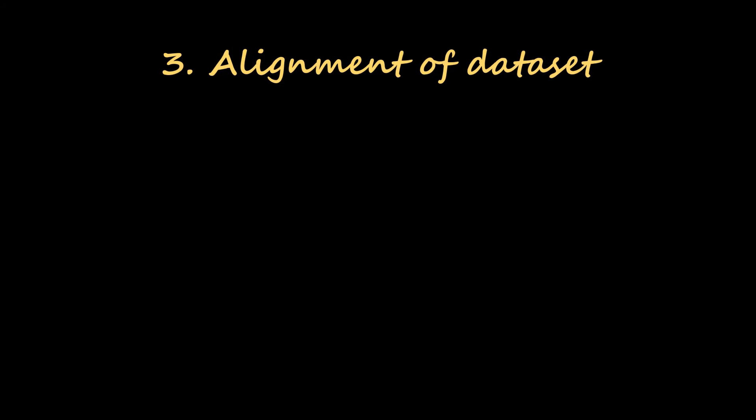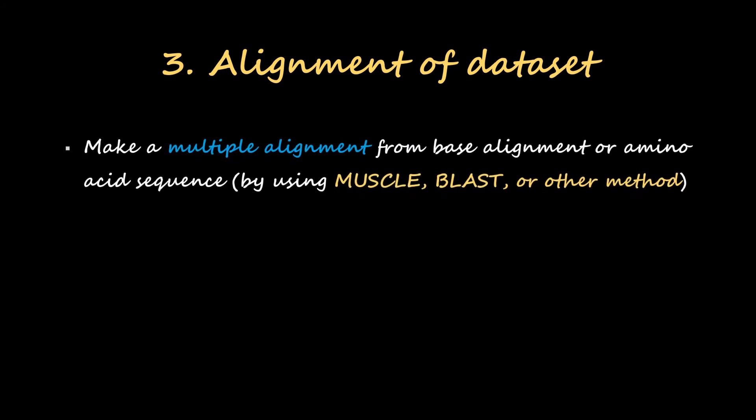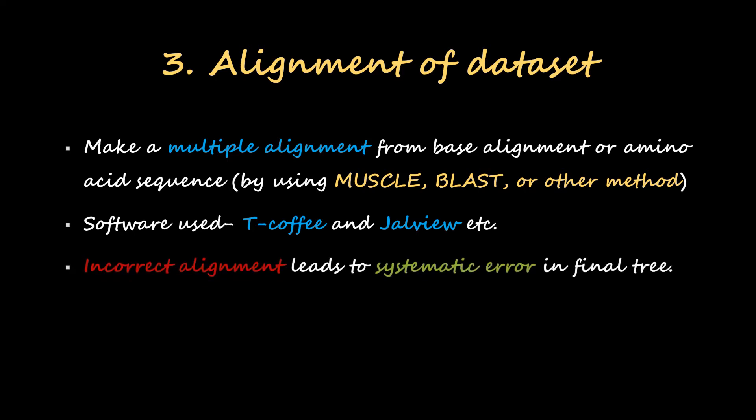Then is alignment of the dataset. We make a multiple alignment from base alignment or amino acid sequence by using certain tools like MUSCLE, BLAST, or other methods. The software used are T-Coffee and Jalview. Incorrect alignment leads to systematic error in final trees, so alignment has to be done in a very robust manner.